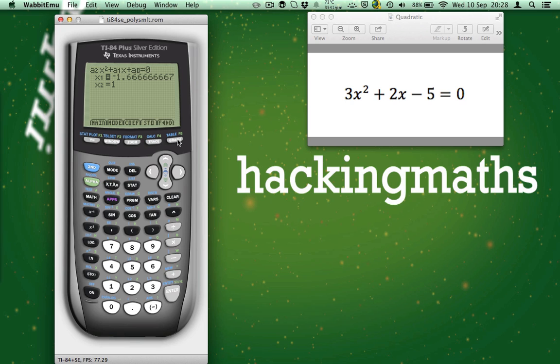If we wanted to edit the solutions so they were fractions, we can press the graph to toggle between fractions and decimals. So as you can see, x1 is now minus 5 thirds or minus 1.6 recurring.